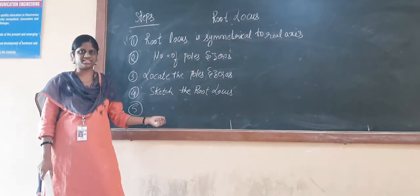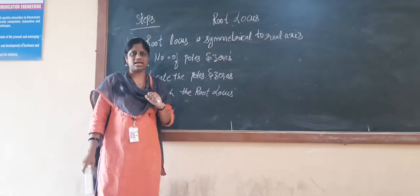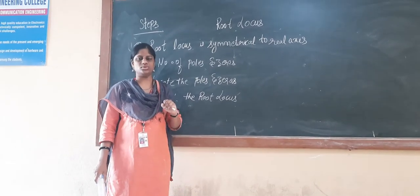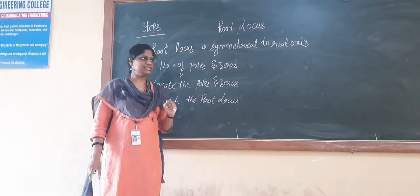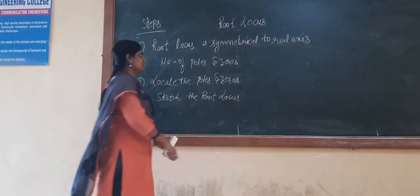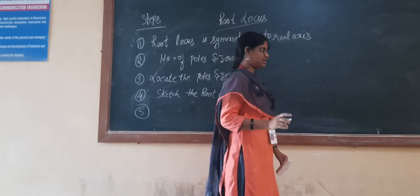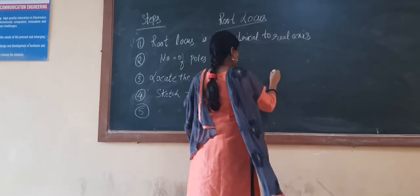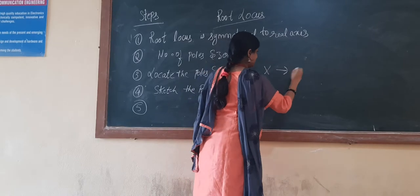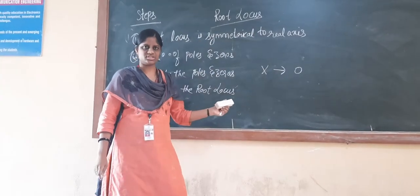This is a review of the previous lecture. We have seen what is the root locus and how to draw it. The root locus has to start with the pole and end with the zero — that is the condition that has to be followed.